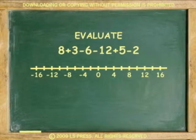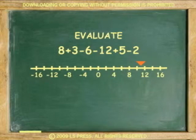Another example. Evaluate: 8 plus 3 minus 6 minus 12 plus 5 minus 2. Starting at zero, move 8 to the right, 3 to the right, 6 to the left, 12 to the left, 5 right, 2 left — the answer is negative 4.